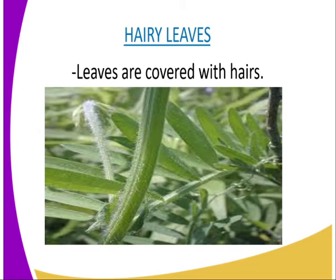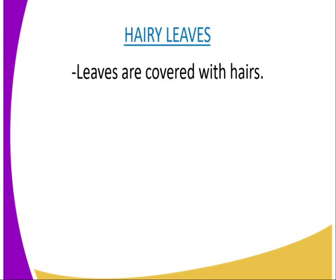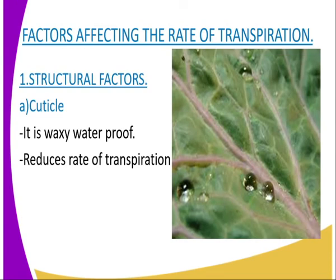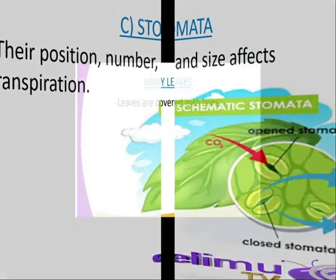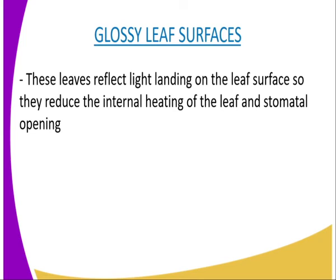The last structural factor is the glossy leaf surface. The glossy surface, which is relatively shiny, reflects light landing on the leaf surface and reduces the internal heating of the leaf, causing stomata to reduce their opening and thus reducing the rate of transpiration. So a glossy leaf reduces the rate of transpiration by reflecting the amount of sunlight.